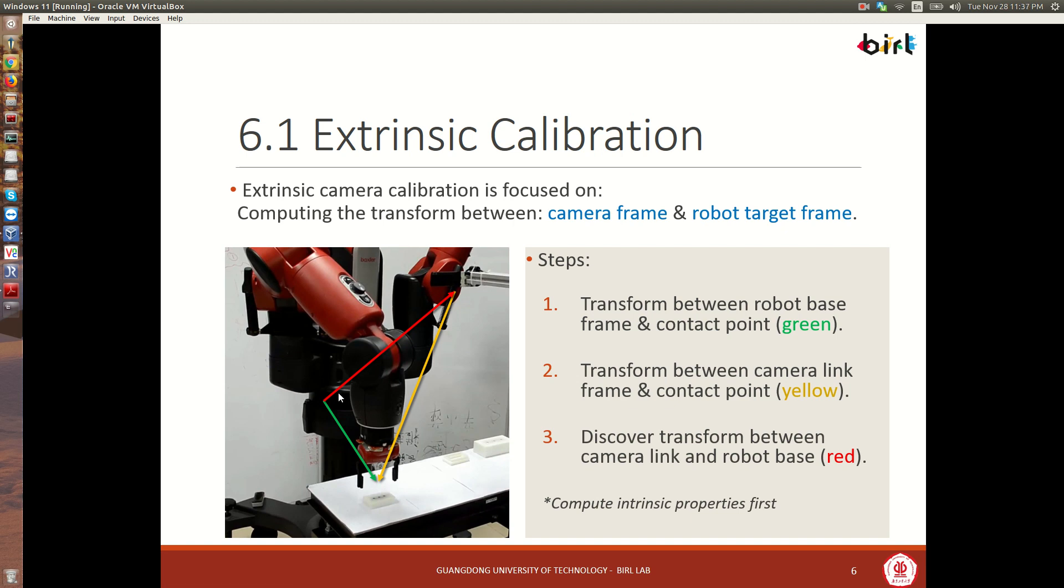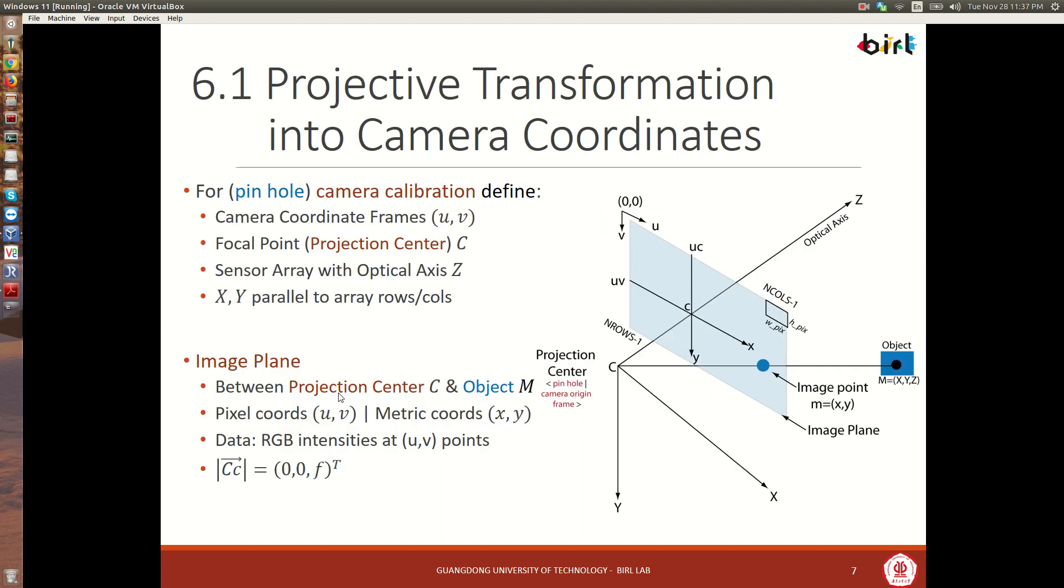So, once you have that, then you can discover the transformation between the camera link and the robot base. Note that before doing extrinsic calibration, we always need to do intrinsic calibration first.